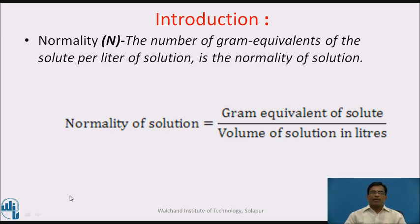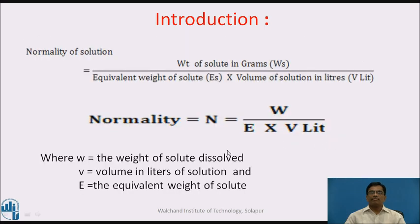Normality is represented by capital N. The number of gram equivalents of the solute per liter of solution is the normality of solution. Mathematically, normality of solution is equal to gram equivalents of solute divided by volume of solution in liters. So normality N is equal to weight of solute in grams (Ws) divided by equivalent weight of solute (Es) multiplied by volume of solution in liters (V). In general, N = W / (E × V in liters).